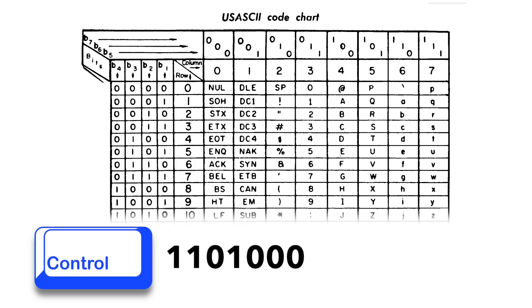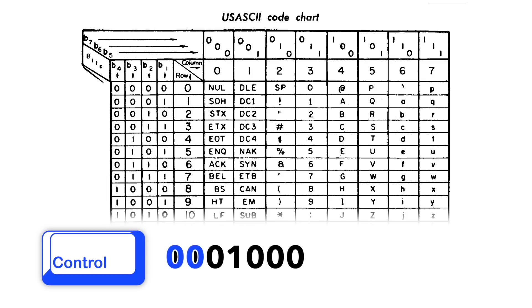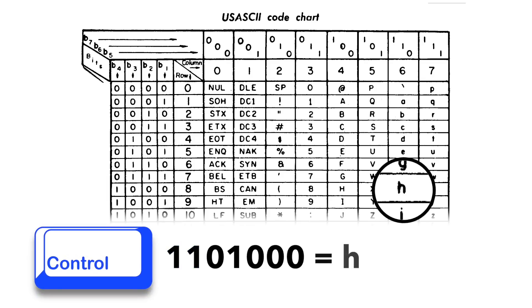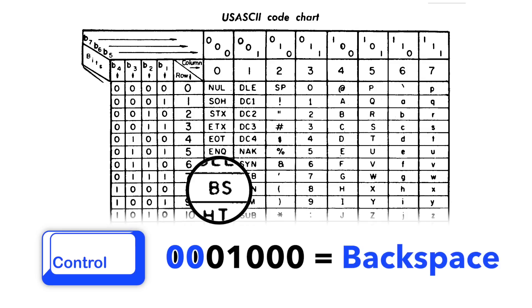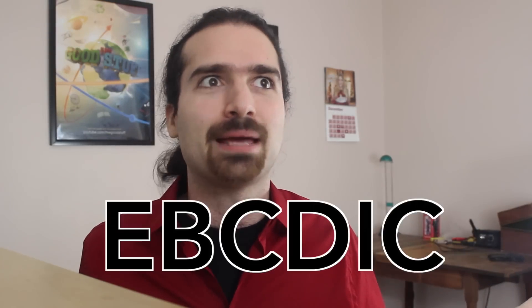This is also why you have a control key on your keyboard. Originally, pressing control would just zero out the top two bits. So to signal a backspace, you'd press Control-H on the command line, and in most places on the Mac, that still works today. Fast forward — computers have become a big deal, and text is still being stored in ASCII, because that's what everyone knows. IBM has this other encoding called EBCDIC, but it doesn't have the same kind of traction, and plus no one knows how to pronounce EBCDIC.